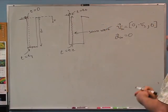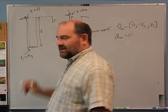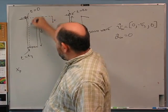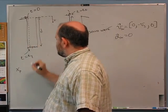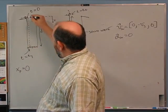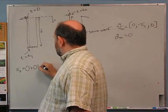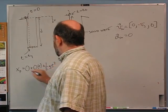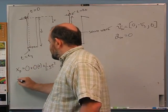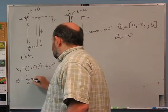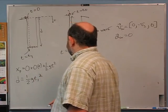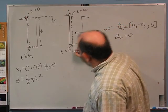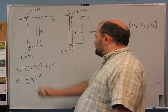So we have two parts to this problem. On the way down, pulling out the x-component: x_p (pebble position) starts at zero, has v₀ = 0, so: x_p = ½g·t². At t = t₁ the pebble hits the bottom, so D = ½g·t₁². That's our first equation.